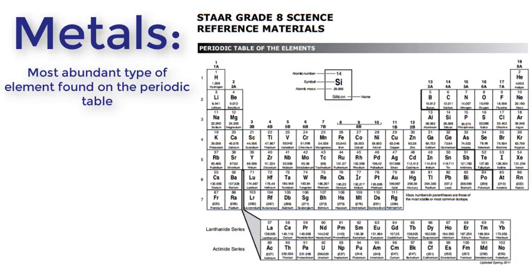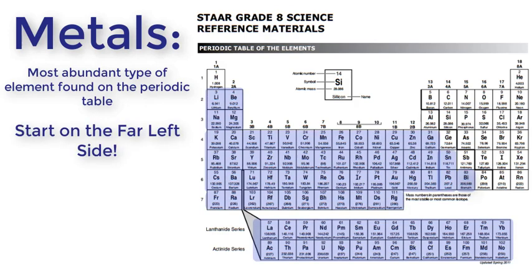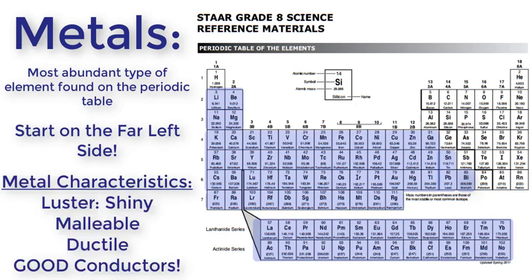Metals are the most abundant type of element found on the periodic table and start on the far left side. The characteristics of metals are that their luster is shiny, they are malleable, which means they can bend without breaking.